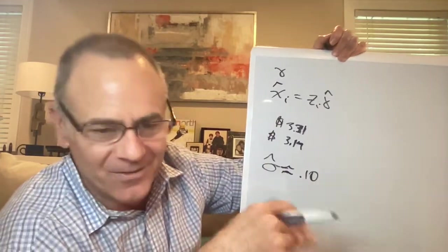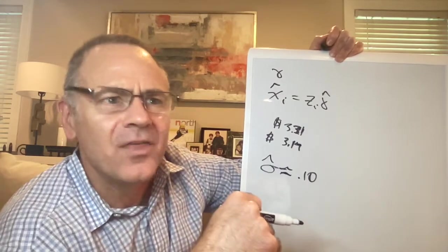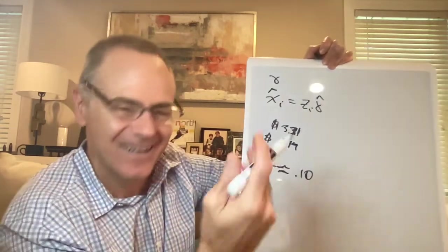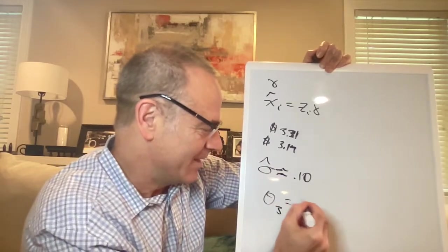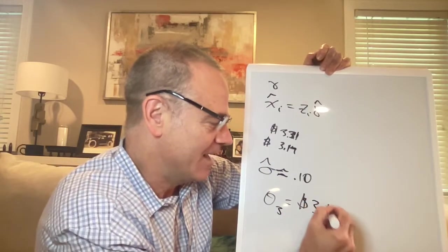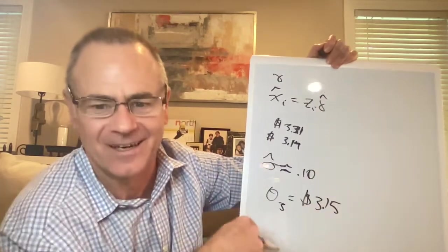And finally, one of the students spoke up and says, Theta-3. Yeah, you're right. It was Theta-3, but what was Theta-3? And the answer was, that was 3.15, 3.15 an hour. That was what the Senate finally passed.